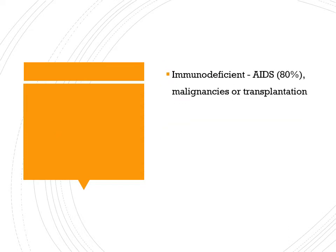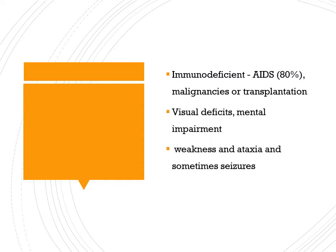This disease typically occurs in AIDS patients who are immunodeficient, or patients with blood malignancies such as leukemias, or those who have undergone organ transplantation. Symptoms include visual deficit, mental impairment, weakness, ataxia (movement incoordination), and sometimes seizures.